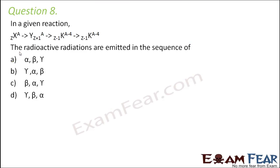Question number 8: In a given reaction, the radioactive radiations are emitted in the sequence of... To find the decay sequence, we focus on changes in atomic number and mass number. From X to Y: mass number stays the same, atomic number increases by 1 — this is beta decay. Next: mass number reduces by 4, atomic number reduces by 2 — this is alpha decay. Finally: mass number and atomic number both remain the same — this indicates gamma decay. So the sequence is beta, alpha, gamma — option C.